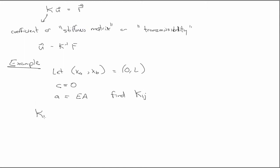So in this case, KIJ is going to be equal to the integral from zero to L of EA times DNI/DX times DNJ/DX.